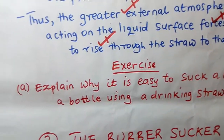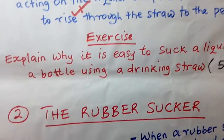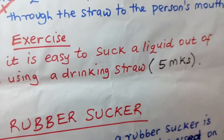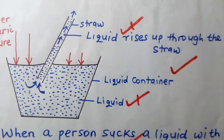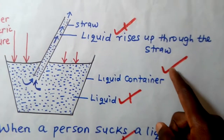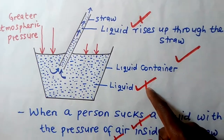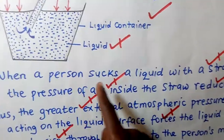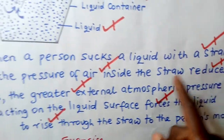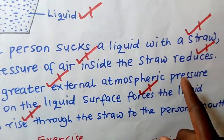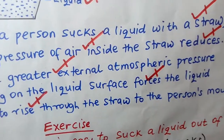As an exercise: explain why it is easy to suck a liquid out of a bottle using a drinking straw — worth five marks. Marks are awarded for drawing an accurate diagram, for proper labeling, and for key explanations: as a person sucks, the pressure inside the straw reduces, so the greater atmospheric pressure acting on the liquid surface forces the liquid to rise through the straw to the person's mouth.